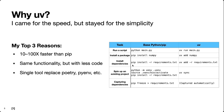Let's say you clone a repo from GitHub or grab some code from a different computer. If you want to get that Python project set up on your laptop, you'd need to do three commands: create a new virtual environment, activate that environment, and then install all the requirements from a requirements.txt file. The number of times I've run these three lines is far more than I can count — and it usually takes a lot of time. However, if you're cloning a repo created with uv, you can just run `uv sync` and instantly the project is ready to run.